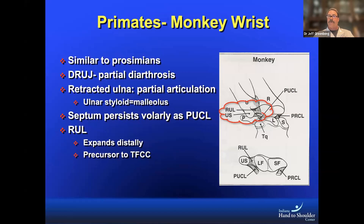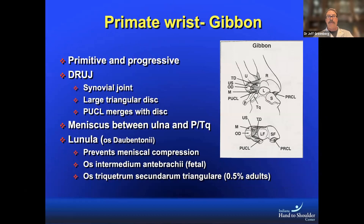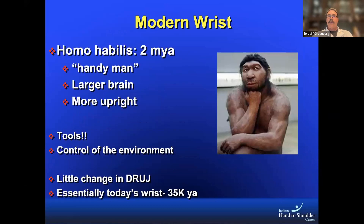We get to the evolutionary timeframe where we start seeing some elements that look like our wrist — these are the early primates and monkeys, similar to prosimians. But the distoradial ulnar joint at this point is a partial diarthrodial joint, characterized by big retraction of the ulna with only a partial articulation. Then we see more progression when we get to the gibbons, more advanced than monkeys. We see a true synovial joint with a large triangular disc, the palmar ulnar collateral ligament merged with the articular disc, and a meniscus between the ulna and the pisiform and triquetrum.